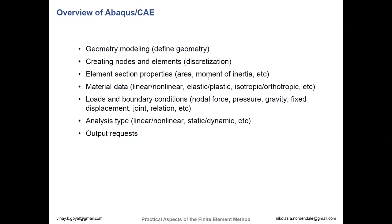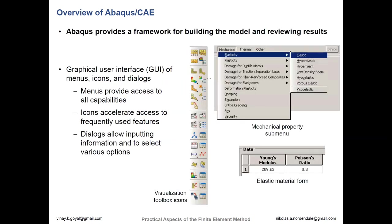Let's give a quick overview of how Abaqus CAE works. We'll talk about geometry, nodes, element selection, material data, loads and boundary conditions, and analysis types. Abaqus provides a framework for building the model. You can choose the kinds of material properties you want, for example. It has a nice graphical interface.